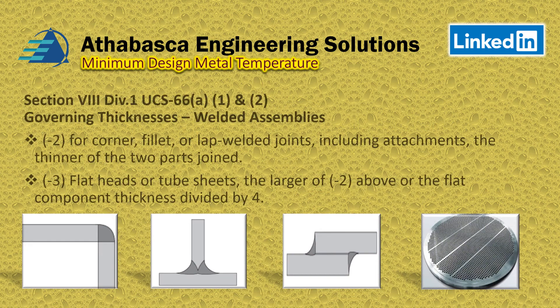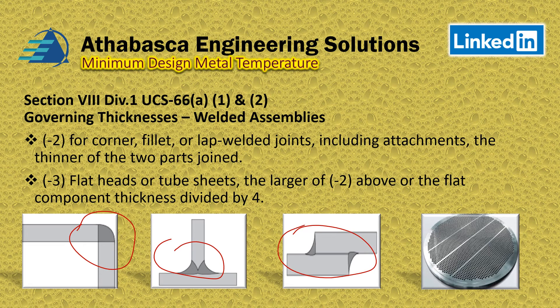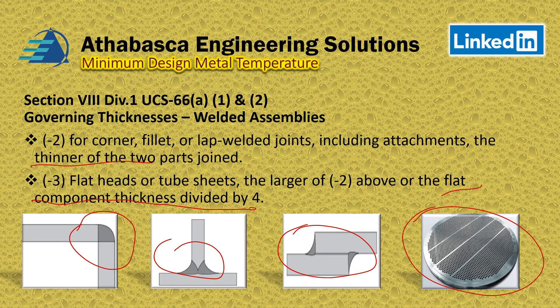Looking at these configurations — corner fillets, lap joints, and attachments — you choose the thinner of the two parts. For flat heads and tube sheets, you take the larger of those two, or the flat component thickness divided by four. Most of the time I see people taking the flat head component and dividing it by four; that's how most practitioners apply this, for example with heat exchanger tube sheets.